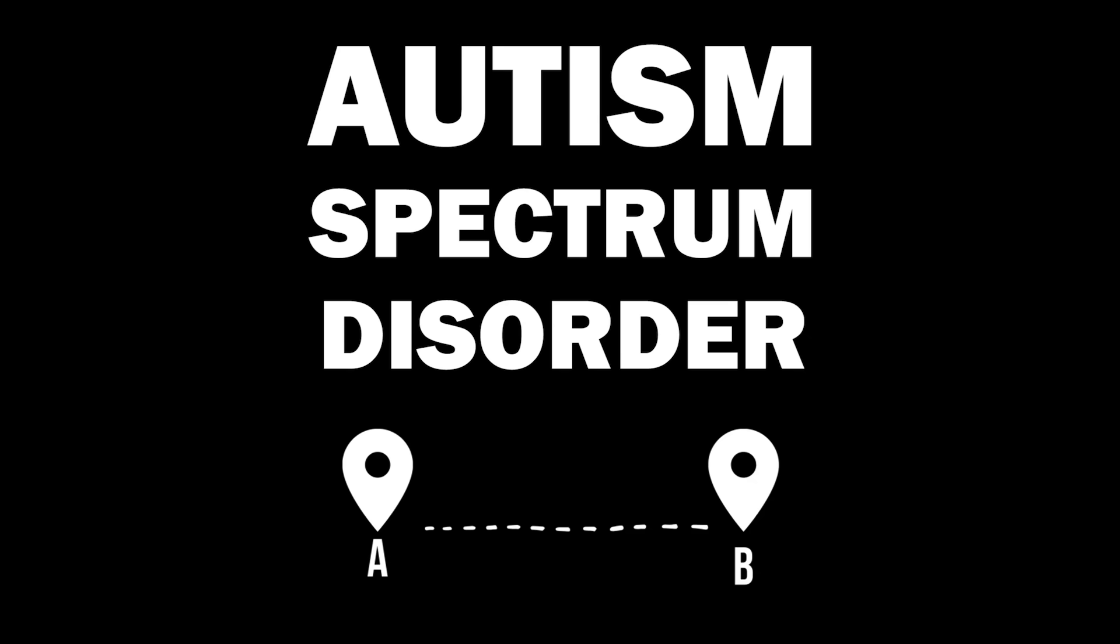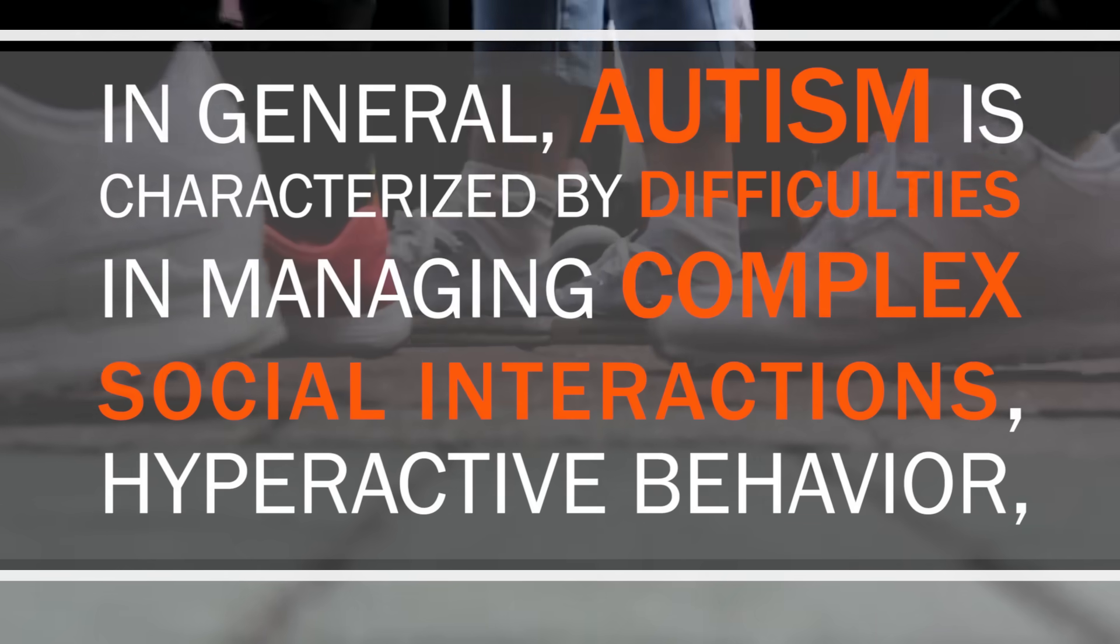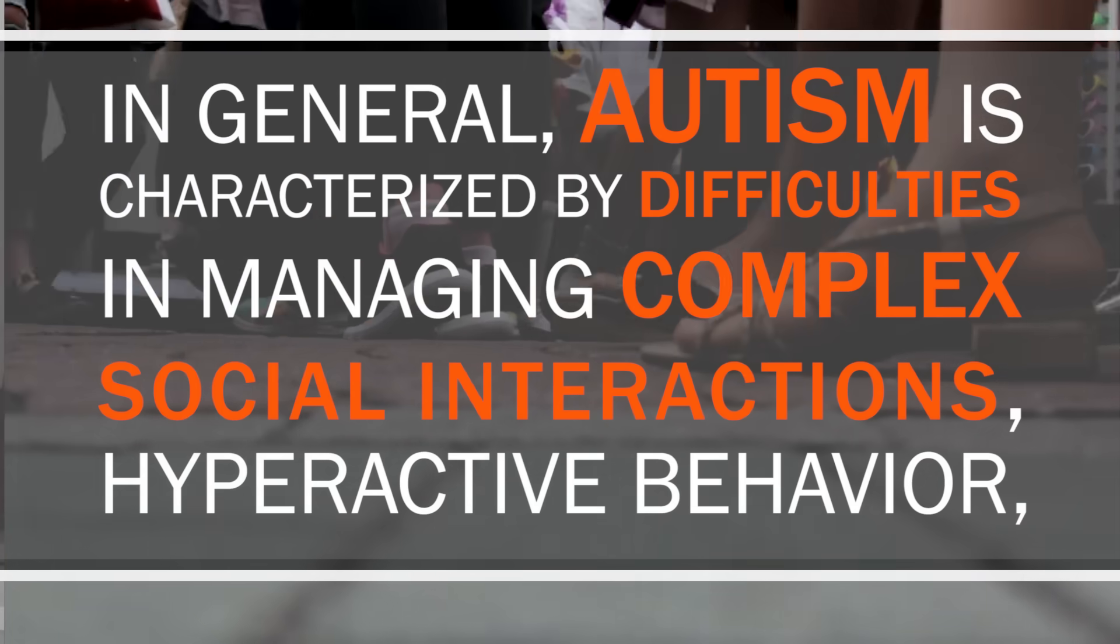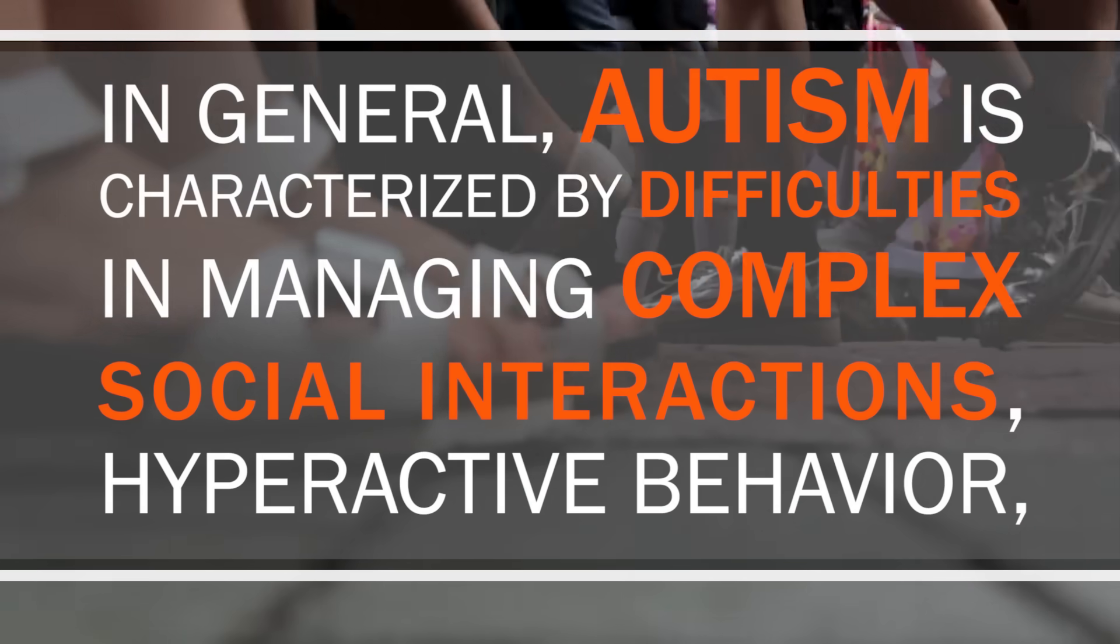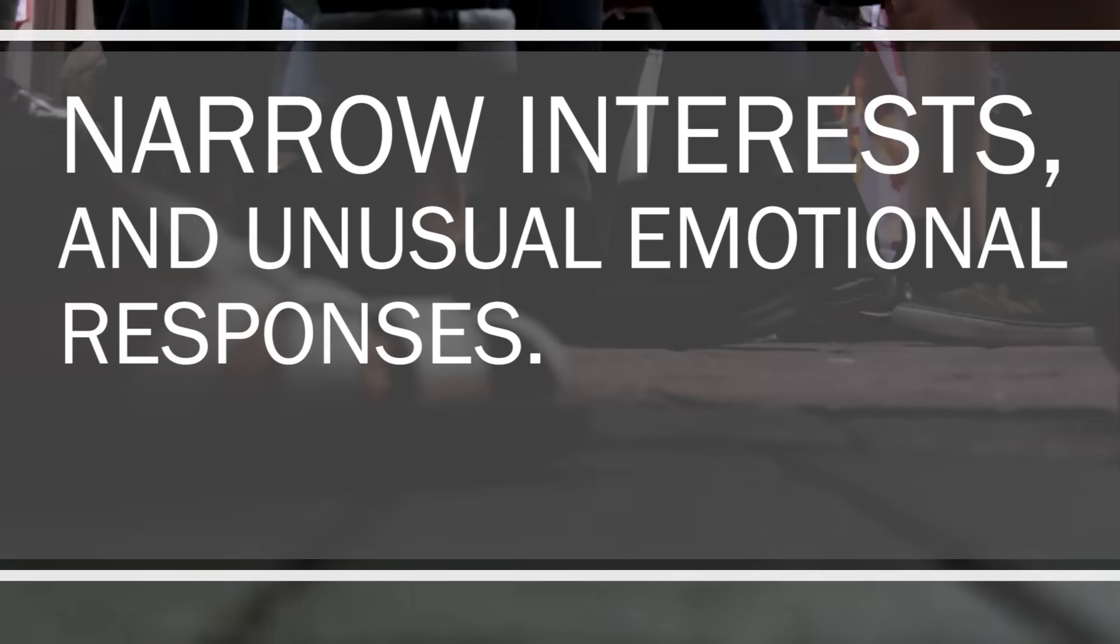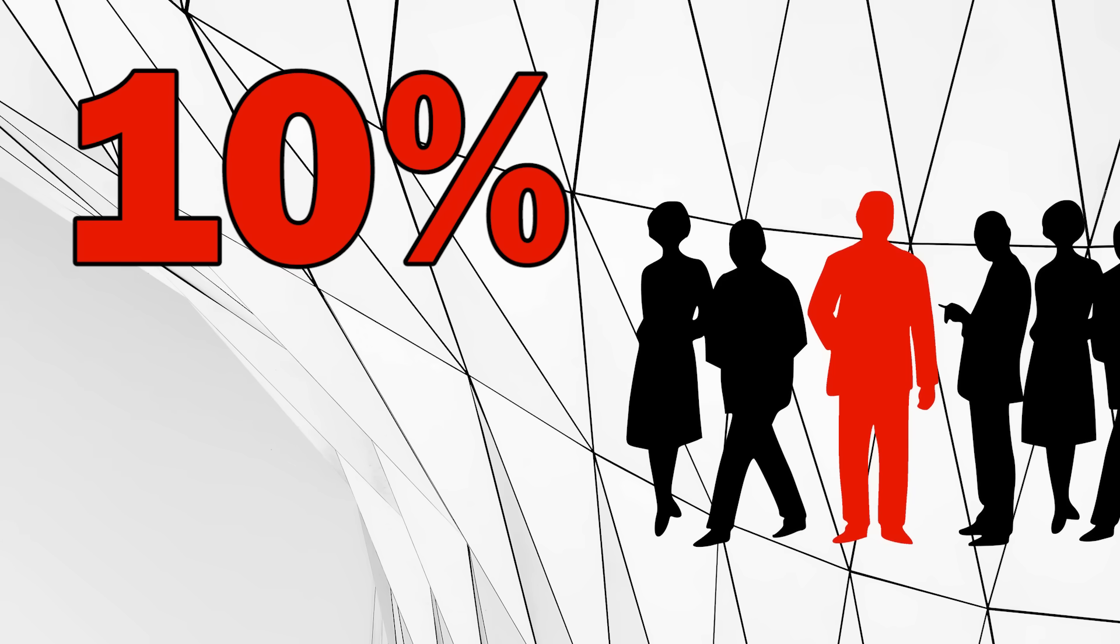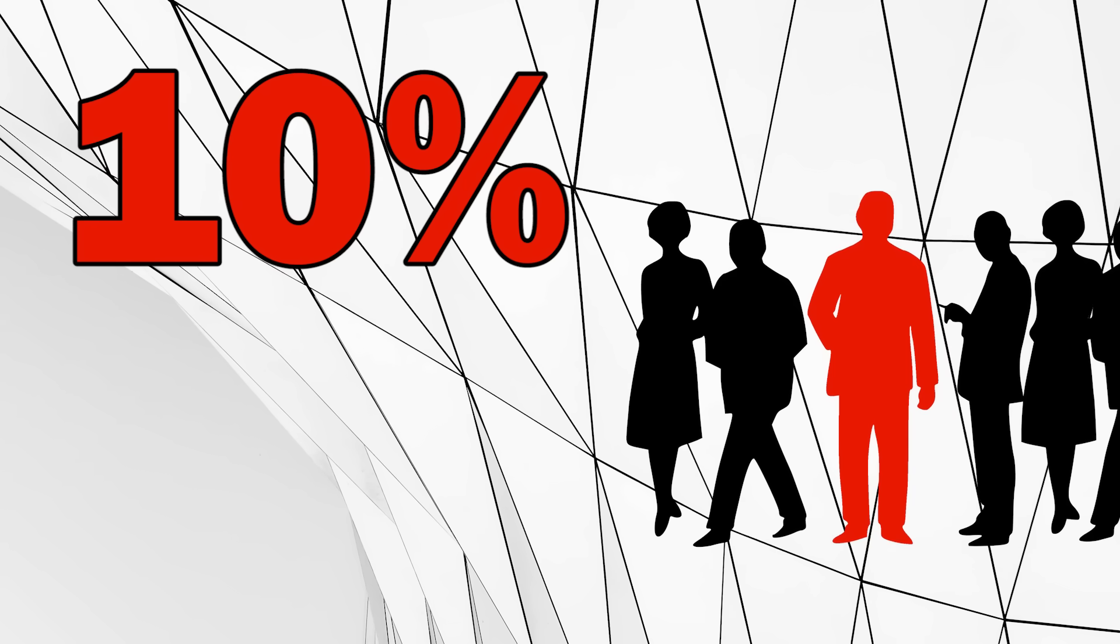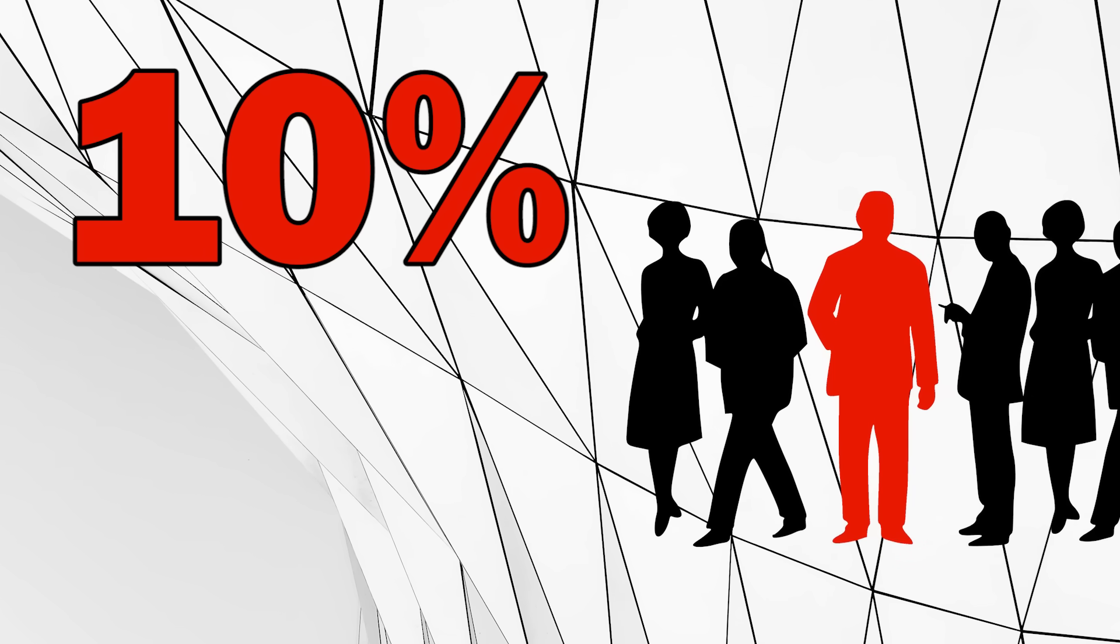People who suffer from autism spectrum disorder. In general, autism is characterized by difficulties in managing complex social interactions, hyperactive behavior, narrow interests, and unusual emotional responses. It is estimated that over 10% of people with autism spectrum disorder also develop savant syndrome.